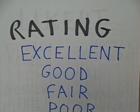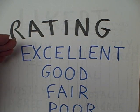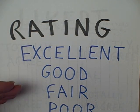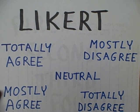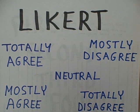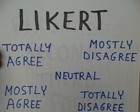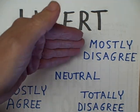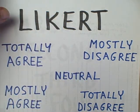Ordinal scales are also used when we have different levels of evaluation, like excellent, good, fair, or poor. Likert scales in social psychology would be another example of ordinal scaling. We present a given statement and see the subject's reaction: totally agree, mostly agree, neutral, mostly disagree, totally disagree.